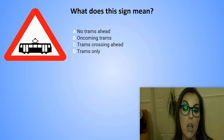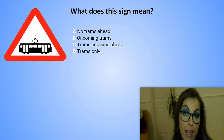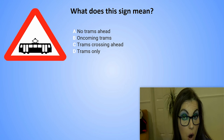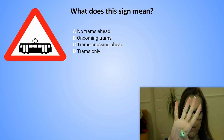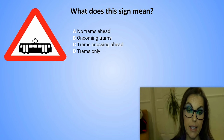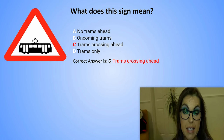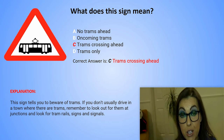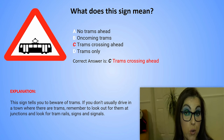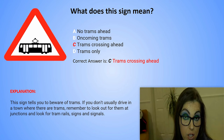What does this sign mean? A. No trams ahead. B. Oncoming trams. C. Trams crossing ahead. Or D. Trams only. The correct answer is C. Trams crossing ahead. Explanation: This sign tells you to beware of trams. If you don't usually drive in a town where there are trams, remember to look out for them at junctions and look for tram rails, signs and signals.